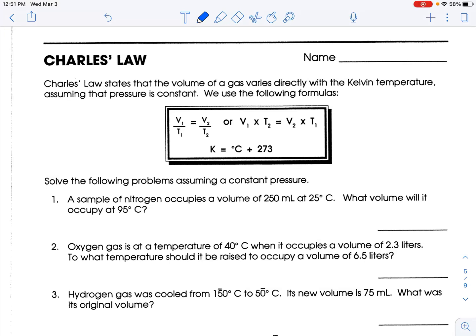All right, so we're talking about Charles' Law today. Charles' Law states that the volume of a gas varies directly with the Kelvin temperature, assuming that pressure is constant. If you use the following formulas, V1 over T1 equals V2 over T2, or if you cross multiply.